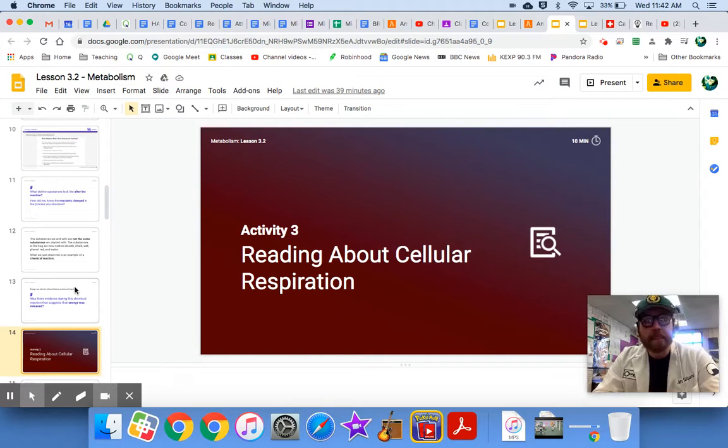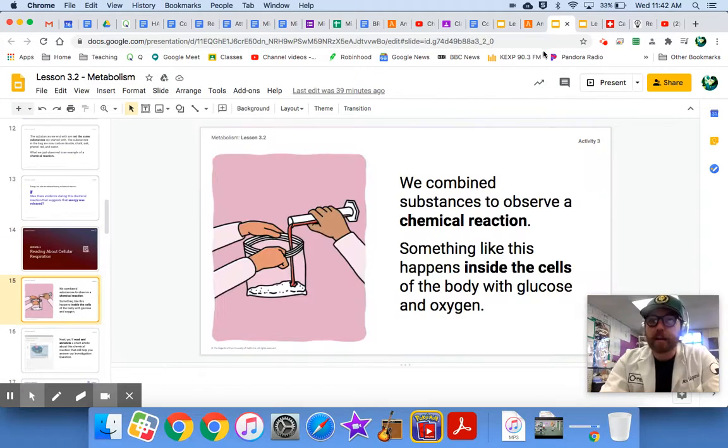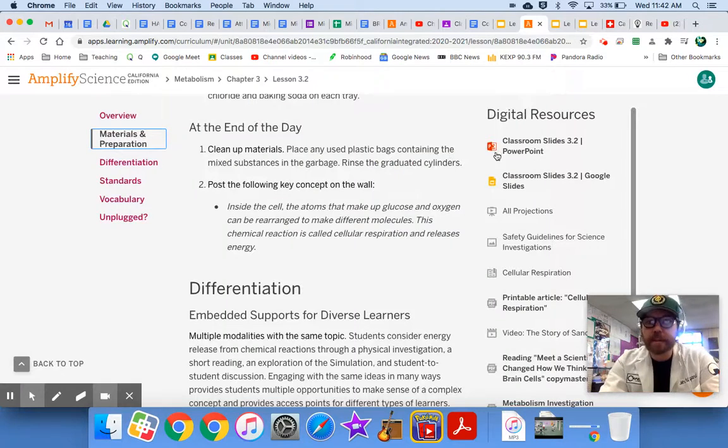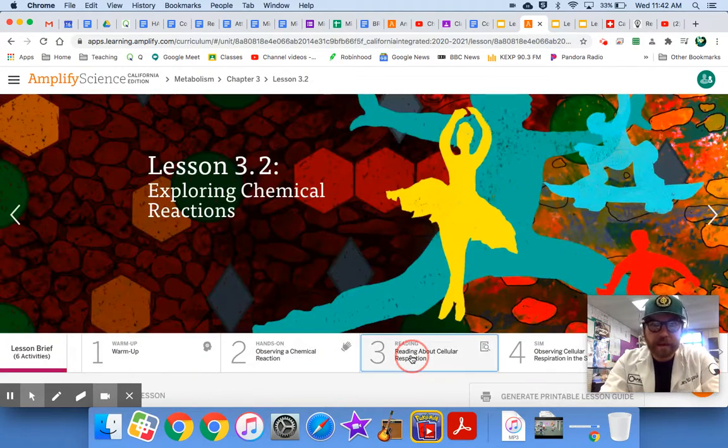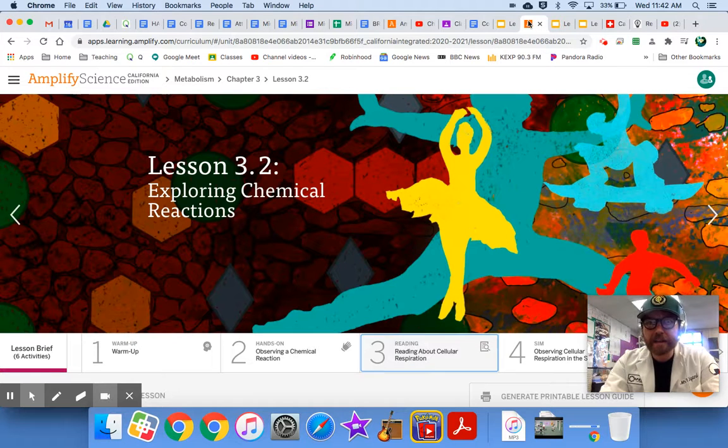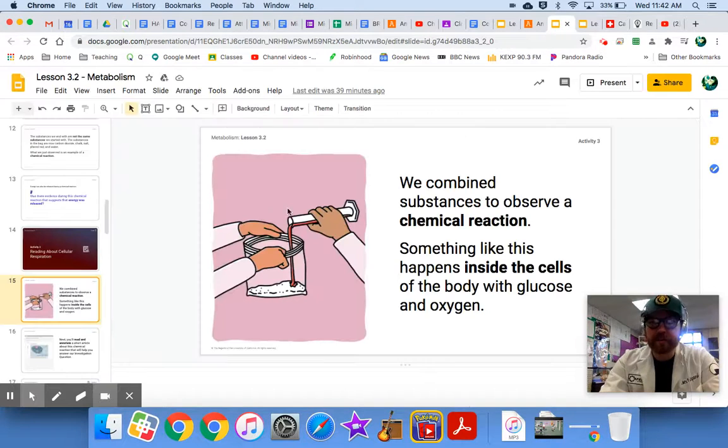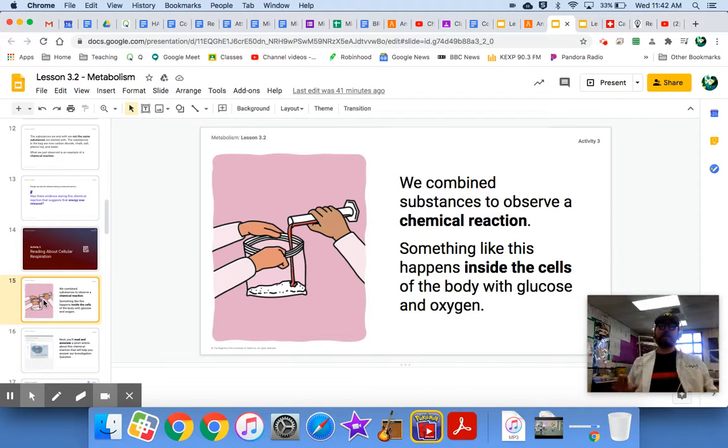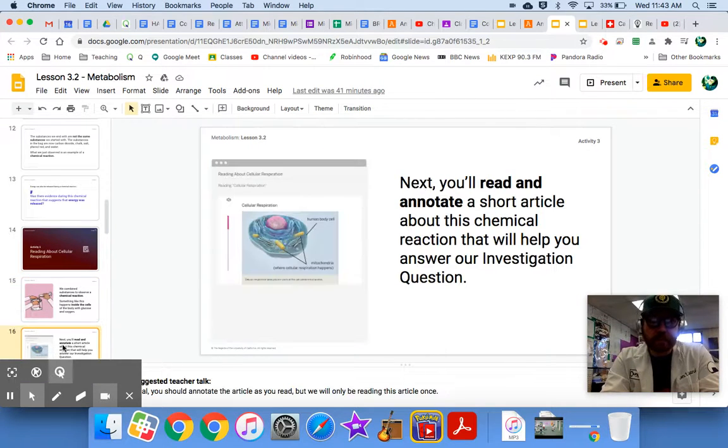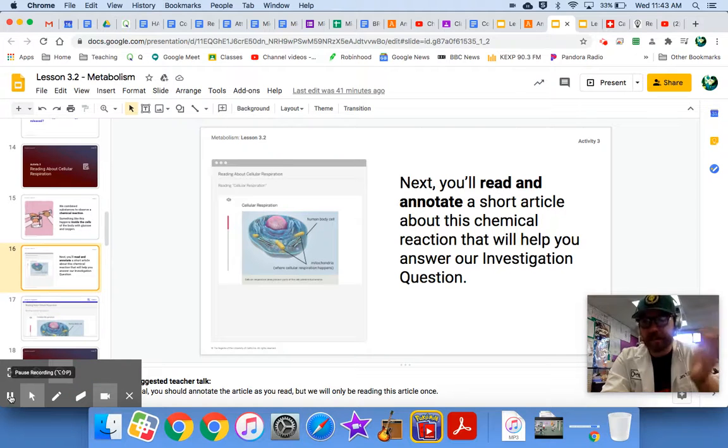So we are going to try to tie this to what's going on inside of our cells with cellular respiration. First thing you're going to do is you're going to do a reading. You are going to go into amplify, activity three, there's an article for you to read a quick article about cellular respiration. I want you to annotate the article. So little intro to the article. We combine substances to observe a chemical reaction. Something like this happens inside the cells of the body with glucose and oxygen. Again, we're trying to connect what we just saw to what is going on in our cells. So please read that article, annotate it, and then come back to me.